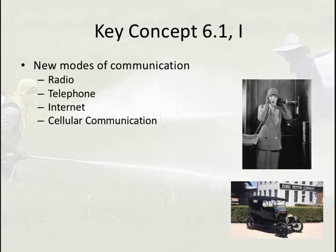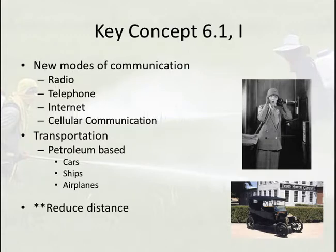New modes of communication burst onto the scene in the 1900s — things like the radio, the telephone, the internet, and cell phones. Communication had been improved upon earlier, like the telegraph in the 1800s, but these really make a much bigger difference because they cut the distance between people tremendously. Transportation does the same thing — it reduces distance.